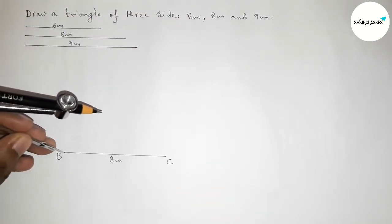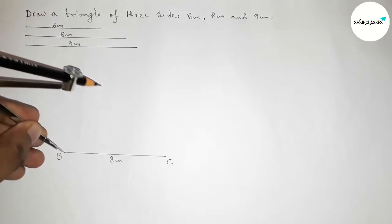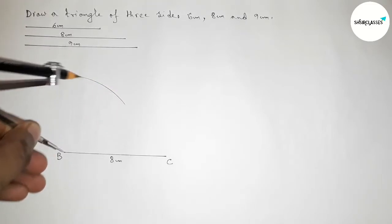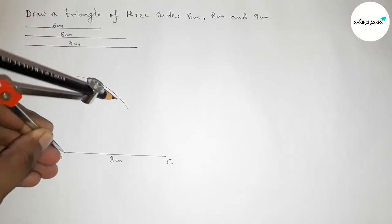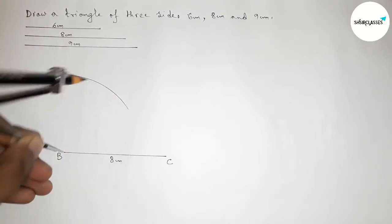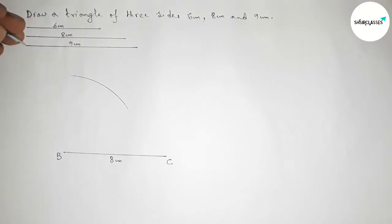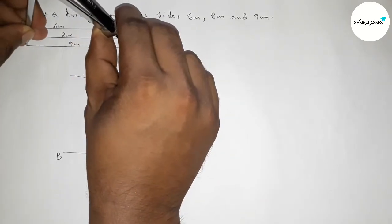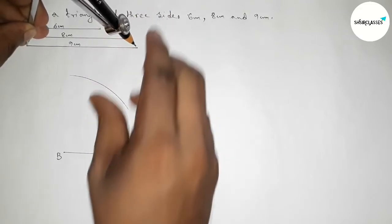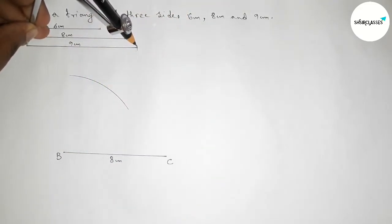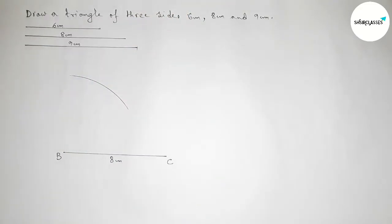Next, taking the length six centimeter by using the compass and putting the compass on point B, drawing an arc by this way.